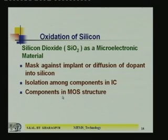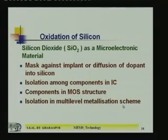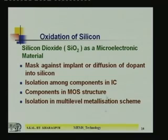Third, silicon dioxide is used as a component in MOS structure — specifically as the gate material. Fourth, it provides isolation in multilevel metallization schemes. In VLSI, there are 3, 4, 5, 6, even 7 to 8 layers of metallization used nowadays, and silicon dioxide is used as a dielectric material between metal layers for isolation. Fifth, it is used as an anti-reflective coating for photodiode devices, since it has very good anti-reflective properties and can absorb radiation — applicable for optical devices.